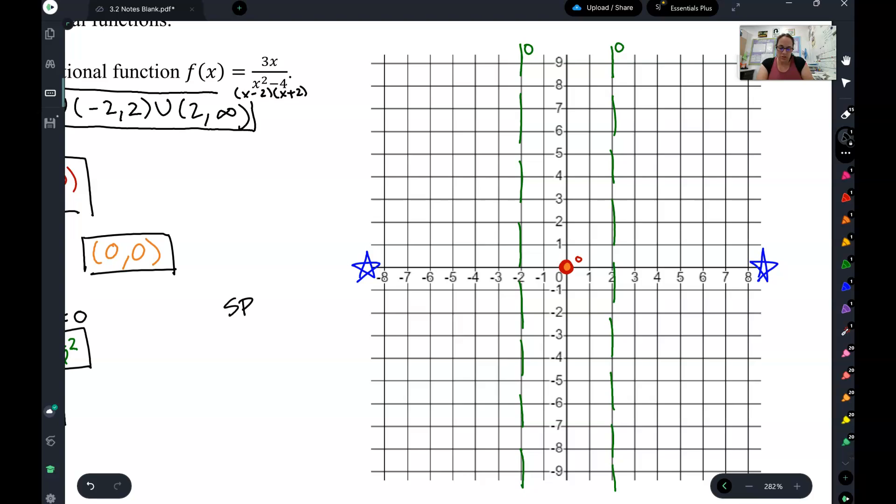So we're going to do a starting point right here. I'm going to plug in, let's plug in 1. That's on this side of the x-intercept. So I have 3 times 1 over 1 squared minus 4, which is 3 over negative 3, which is negative 1.